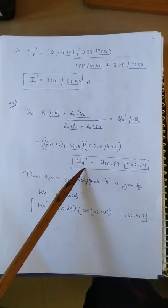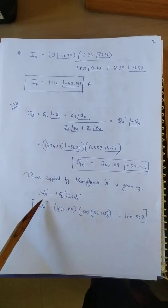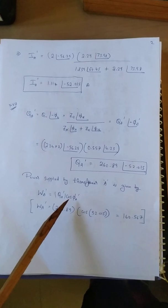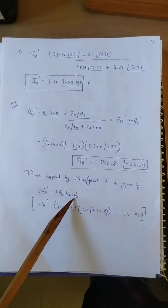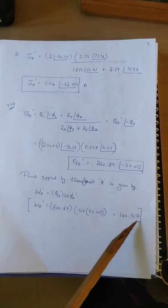After getting kVA, if you multiply kVA with cos phi we should be getting the power supplied. W'A will be Q'A multiplied by cos phi A dash. If you multiply the same we have 160.567 watts.